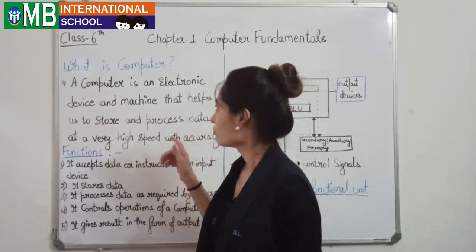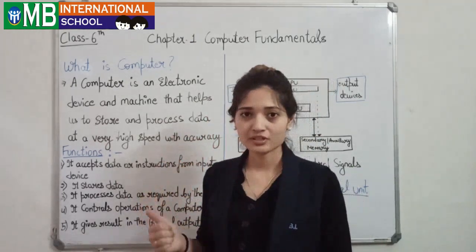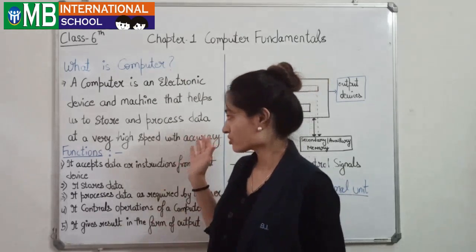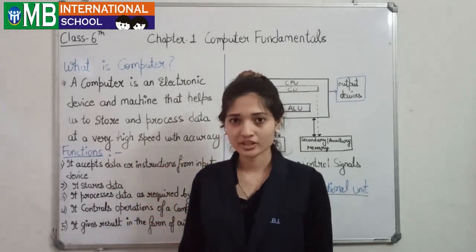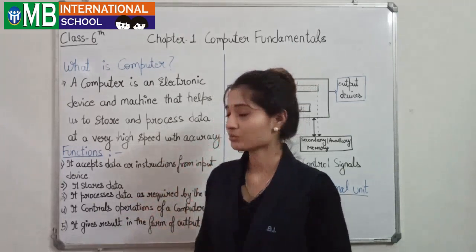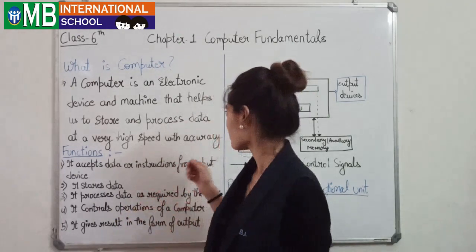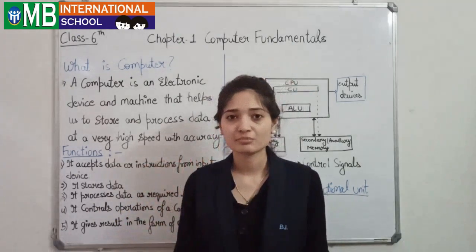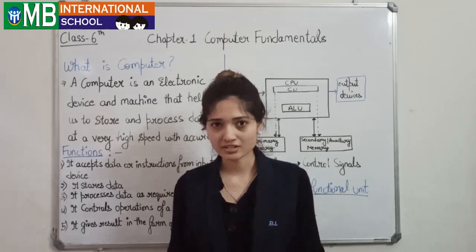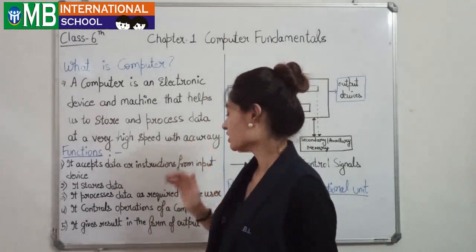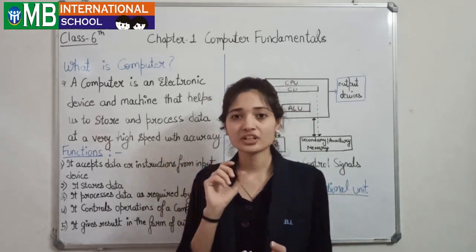Let's get started. What is a computer? A computer is an electronic device and machine that helps us to store data and process data at very high speed with accuracy. Computer works very fast and gives a result in nanoseconds. Accuracy means the computer gives an accurate result — it gives us a perfect result.